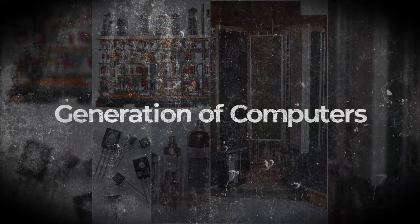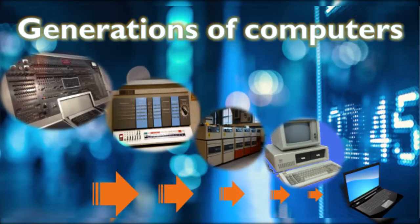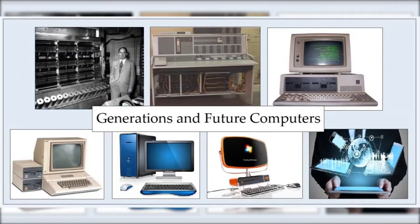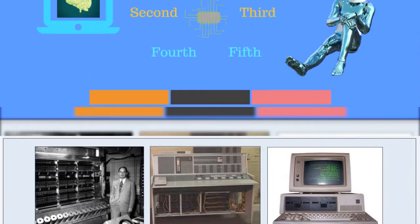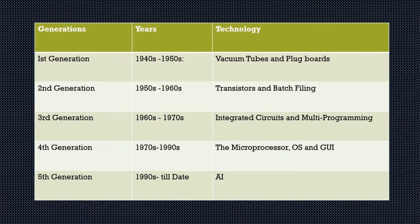Today we will discuss the five different generations of computer. Generation in computer talk is a step in technology that provides a framework for the growth of the computer industry. Originally the term generation was used to differentiate between hardware technologies, but it has now been extended to include both hardware and software. The timeline specified for each generation is tentative, not definite; the generations are based on evolving chip technology rather than any particular time frame.